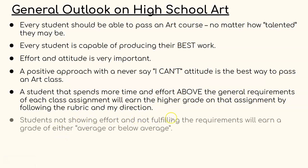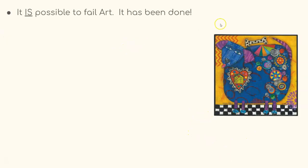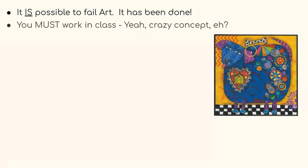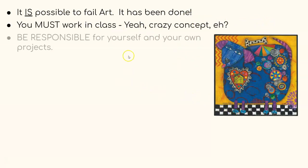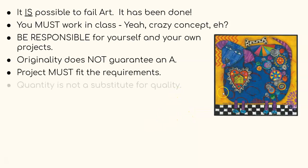A student not showing effort and not fulfilling requirements will earn an average or below-average grade. A talented student who does not produce to their own abilities might earn a lower grade than a struggling student who learns and achieves at their own level. It is possible to fail art — it has been done and will continue to be done. You must work in class. Originality does not guarantee an A; the project must fit the requirements. Quality is not a substitute for quality.